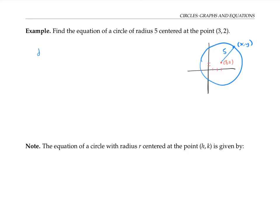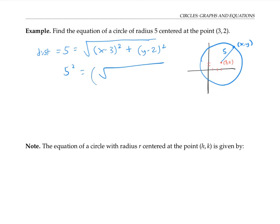From the distance formula, that distance of five is equal to the square root of the difference of the x coordinates — that's x minus three squared — plus the difference of the y coordinates, that's y minus two squared. If I square both sides of that equation, I get five squared equals this square root squared. In other words, 25 is equal to x minus three squared plus y minus two squared, since the square root and the squared undo each other.